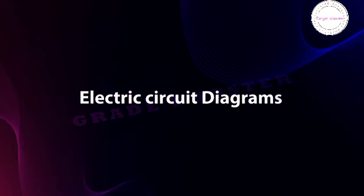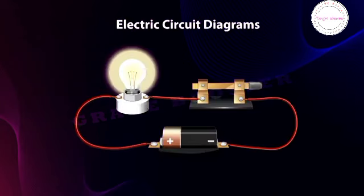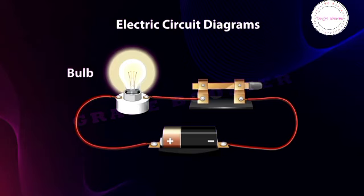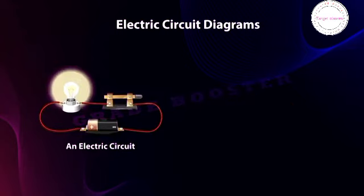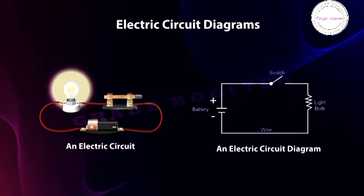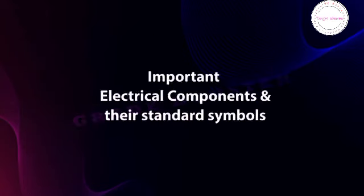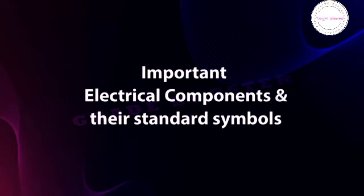Electric circuit diagrams: an electric circuit generally includes a cell or battery, a switch or plug key, electrical components, and connecting wires. To make it easier to understand, we often use a schematic diagram where different parts of the circuit are represented by standard symbols. Now let us see the important electrical components and their standard symbols.